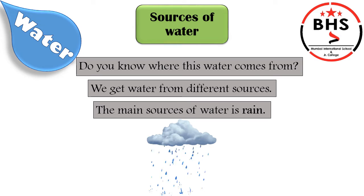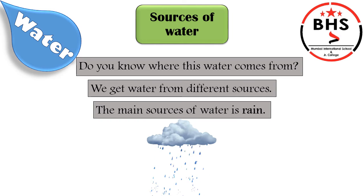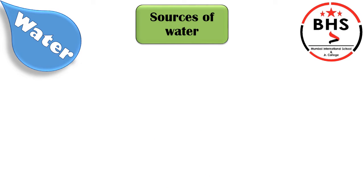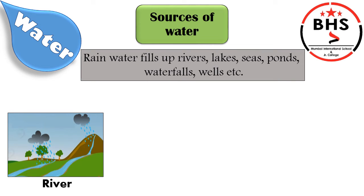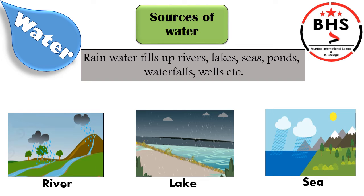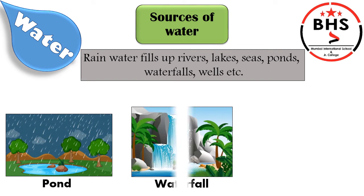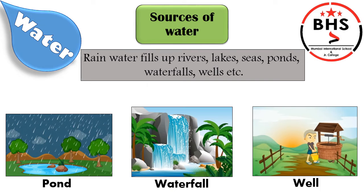The main source of water is rain. Children, the first and the main source of water for the world is rain. Rain water fills up rivers, lakes, seas, ponds, waterfalls, wells, etc. When it rains, the rain water fills the rivers, lakes, seas, ponds, and wells. So these are some of the other sources of water.